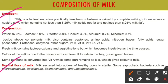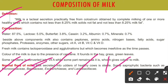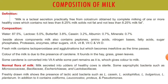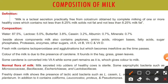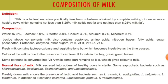If we see the normal flora of milk, milk secreted into the udders of a healthy cow is sterile, and some saprophytic bacteria such as Micrococcus, Bacillus, Acerciation, and Lactobacillus will be present. Fresh drawn milk shows the presence of lactic acid bacteria such as Lactobacillus casei, Lactobacillus acidophilus, Lactobacillus bulgaricus, and Lactobacillus plantarum. In addition, it also contains coliforms, Leuconostoc, Protease, and Pseudomonas bacteria.